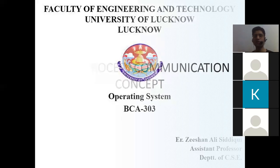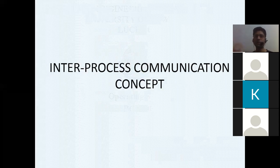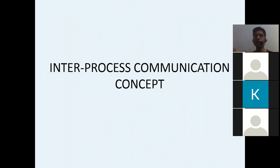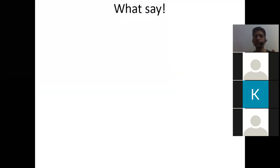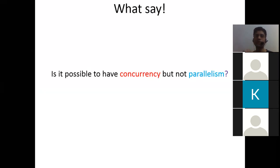We are done with threads — now let's move to inter-process communication, the last topic of the first unit. Various processes execute and interact with the OS, but sometimes one process wants to communicate with another process. What are the benefits of such communication and how do they interact? This is the concept of inter-process communication. Before starting, I have a question: is it possible to have concurrency but not parallelism?